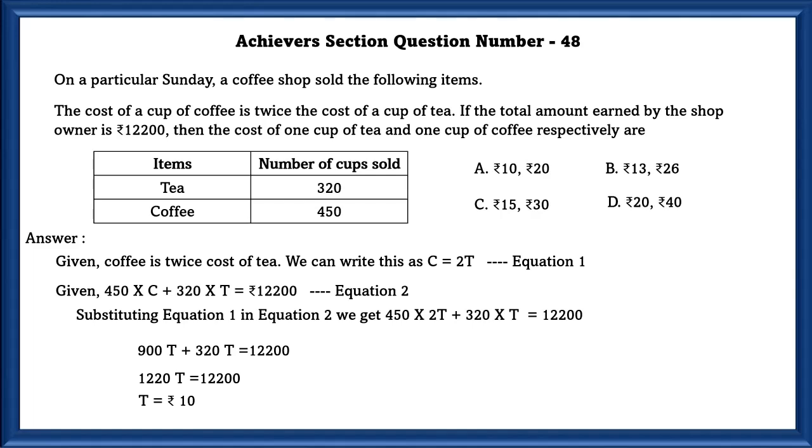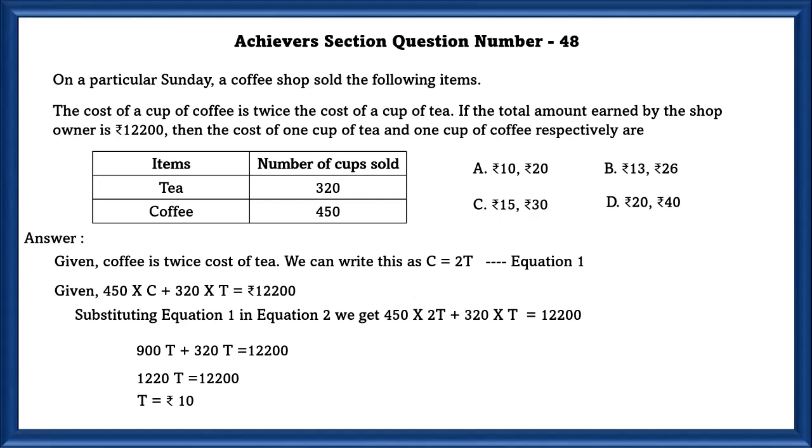Using this, we can find the value of T, which is equal to 10 rupees. Substituting the value of T in equation 1, we can get the value of C, which is equal to 20 rupees. So the answer is A.